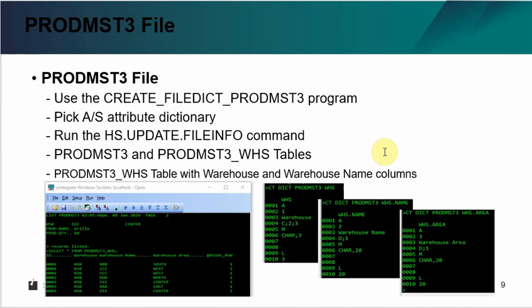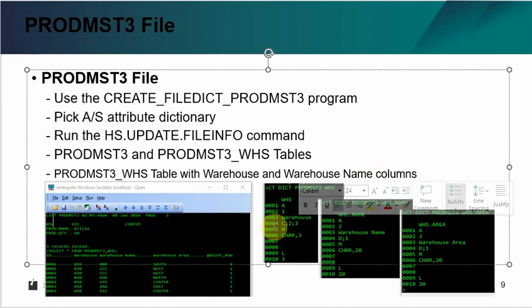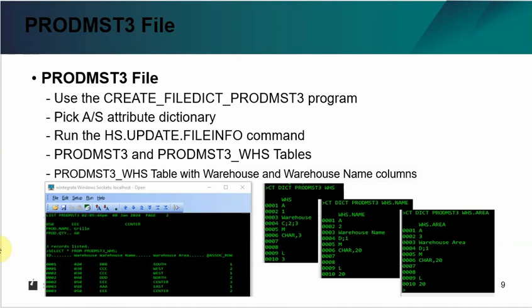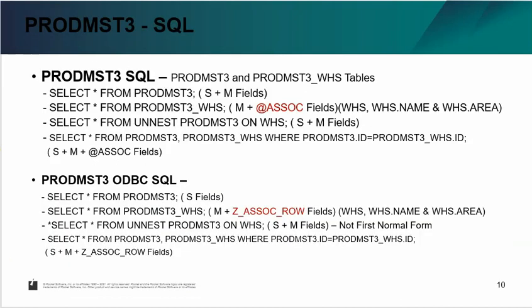The third example is called prod_MST3, which is very similar to prod_MST2. The key difference is that you only need to look at field number four, the control field, which shows C semicolon two semicolon three, and the other two fields connect back to field one, WHS. So you have three fields together. The SQL statements are very similar, just giving slightly different results.